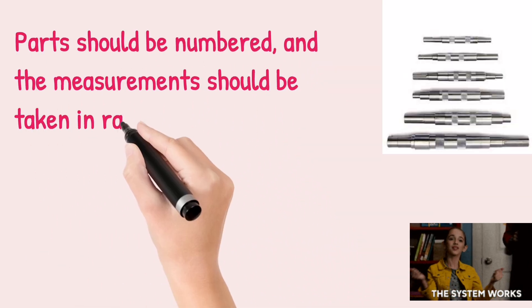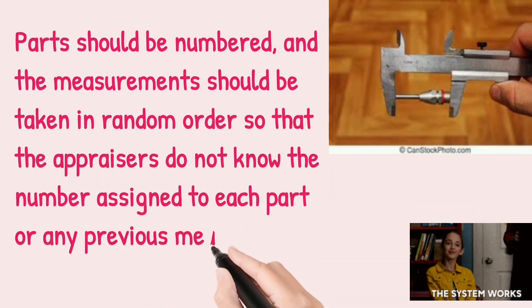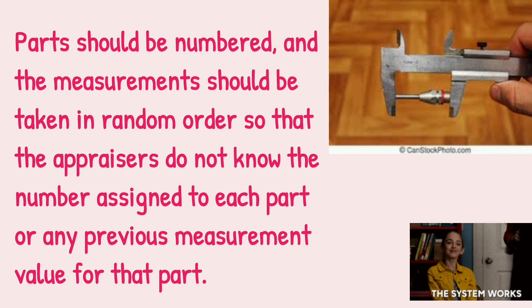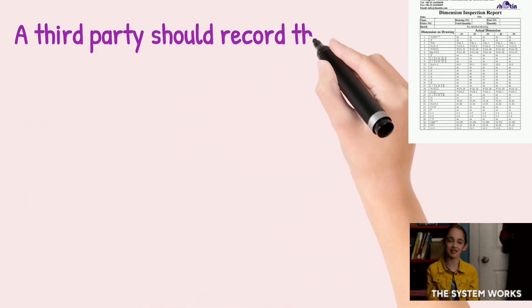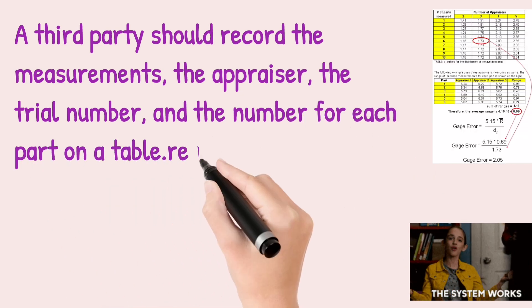Parts should be numbered, and the measurements should be taken in random order so that the appraisers do not know the number assigned to each part or any previous measurement value for that part. A third party should record the measurements, the appraiser, the trial number, and the number for each part on a table.